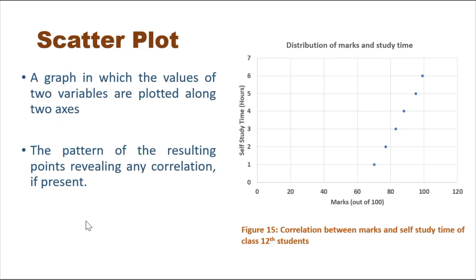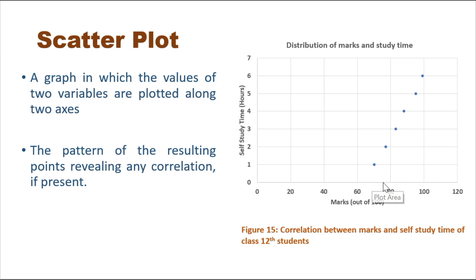Scatter plots are used when we want to examine the relationship between two numeric variables. We plot values of two variables along two axes, and the pattern of the resulting points reveals any correlation. This figure represents the correlation between marks and self-study time of class 12 students. On the x-axis are marks out of 100 and on the y-axis is self-study time in hours. We can see that as marks increase, study time also increases — indicating a positive relationship between self-study time and marks.